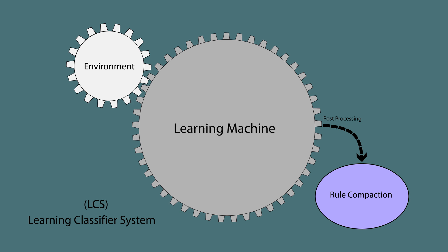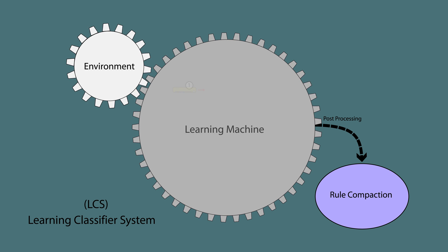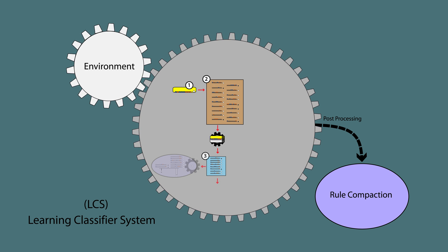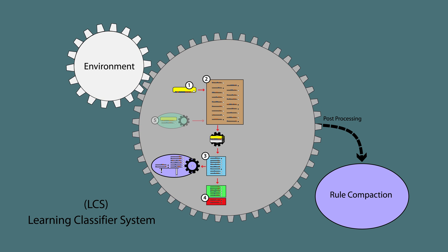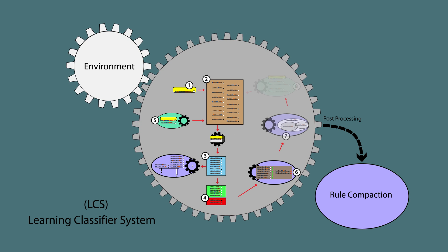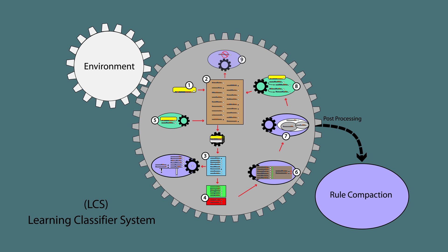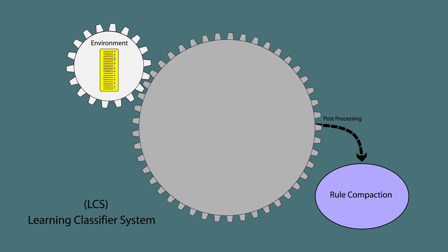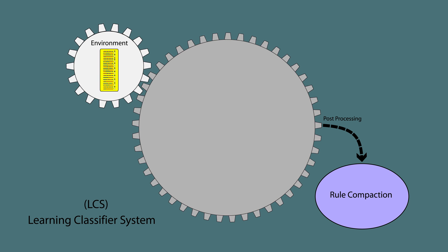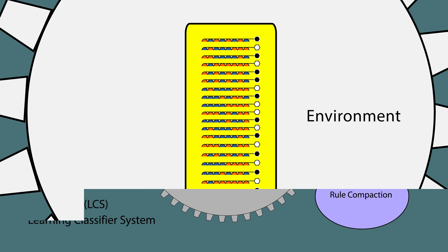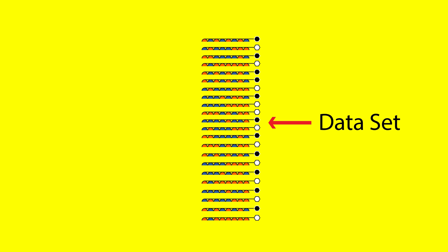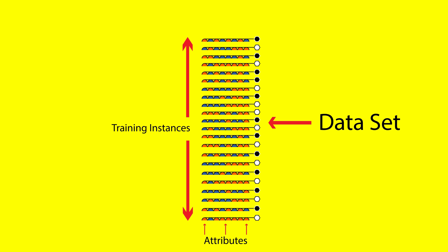The learning machine is the core of an LCS and includes several interacting components that operate in a stepwise learning cycle. The environment is the source of data upon which the LCS algorithm learns. For example, the environment could be a dataset with some number of training instances and attributes.